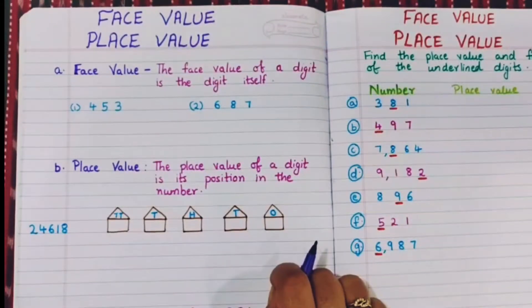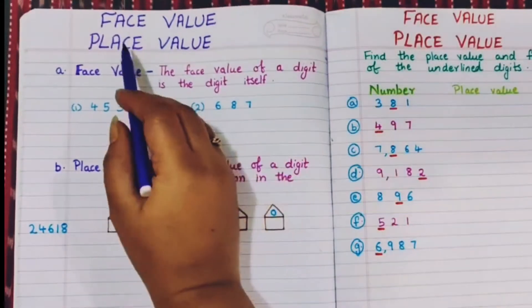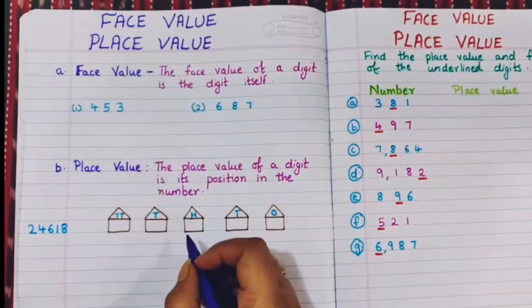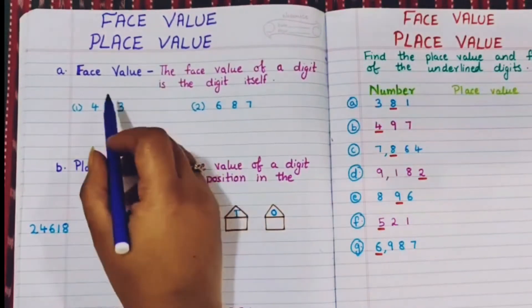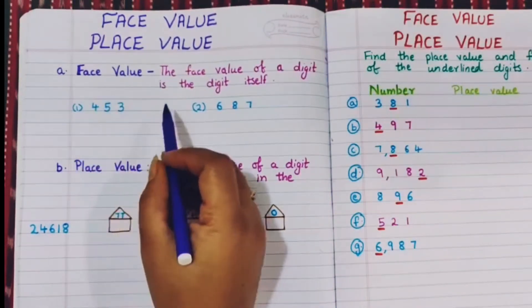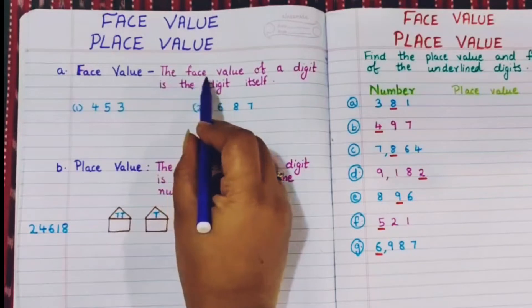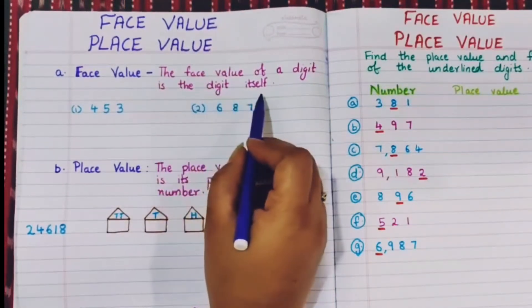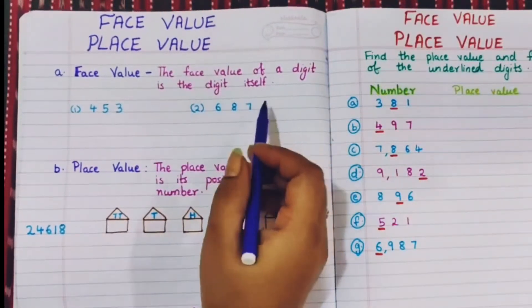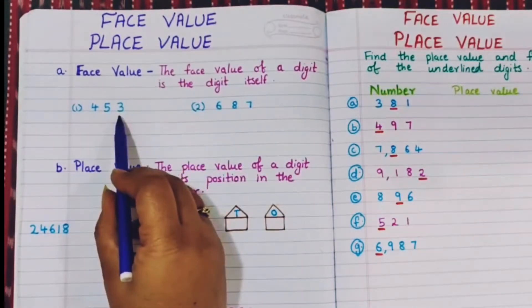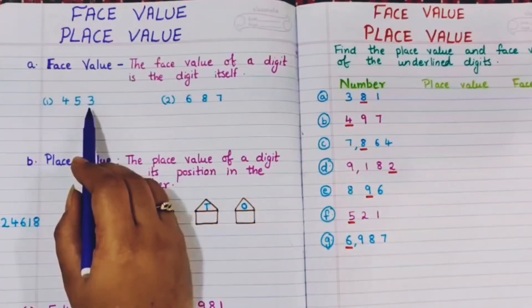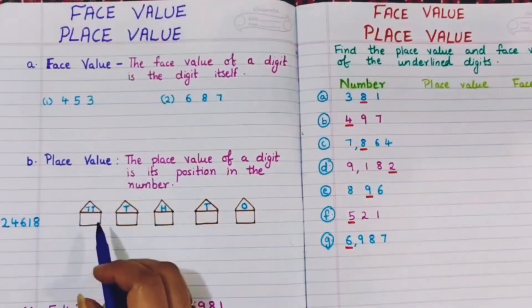Hi everyone, welcome back! Today we are going to learn about face value and place value. The face value of a digit is the digit itself — when we look at a number, the face value is simply the digit itself.